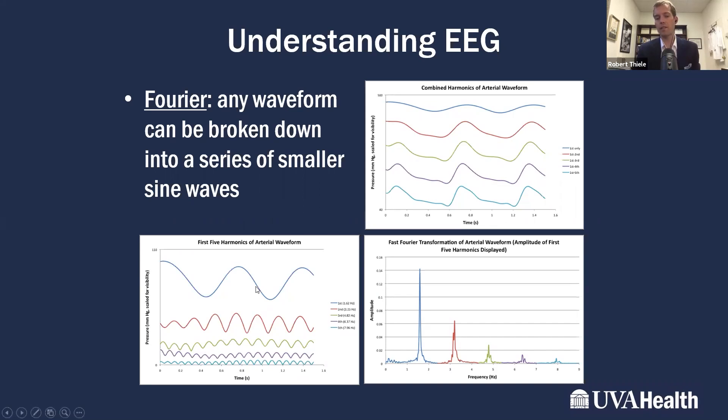If you add the first and second harmonic, you get this red squiggly line on the top right. As you keep adding the harmonics, which are these sine waves that make up the blood pressure waveform, you get a tracing that looks more and more like the actual blood pressure tracing. You could do that with blood pressure tracing, with EKG signals, with EEG signals.